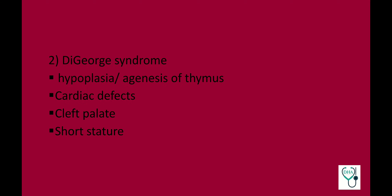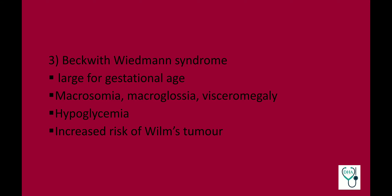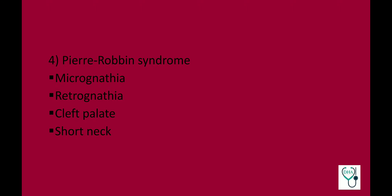DiGeorge syndrome: the most important feature is hypoplasia or agenesis of the thymus, along with cardiac defects, cleft palate, and short stature. Beckwith-Wiedemann syndrome: the patient is large for gestational age with macrosomia, macroglossia, visceromegaly, hypoglycemia, and increased risk of Wilms tumor. Pierre Robin syndrome: the patient has micrognathia, retrognathia, cleft palate, and short neck — these four points are characteristic.